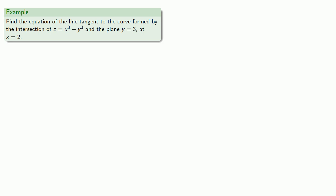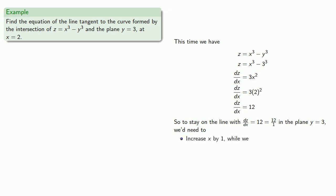and so we'll want to know what happens at x equal to 2. So again, as long as we're staying on the plane y equals 3, y is always equal to 3, it's a constant, and we can replace it in our equation. We can differentiate. At x equals 2, we find dz dx is equal to 12. And remember, the derivative is the rate of change, in this case of z with respect to x. So to stay on the line with dz dx equals 12, or 12 divided by 1, in the plane y equals 3, we'd need to increase x by 1, while we increase z by 12, and leave y unchanged. And so that means we're going to move along the vector 1, 0, 12.